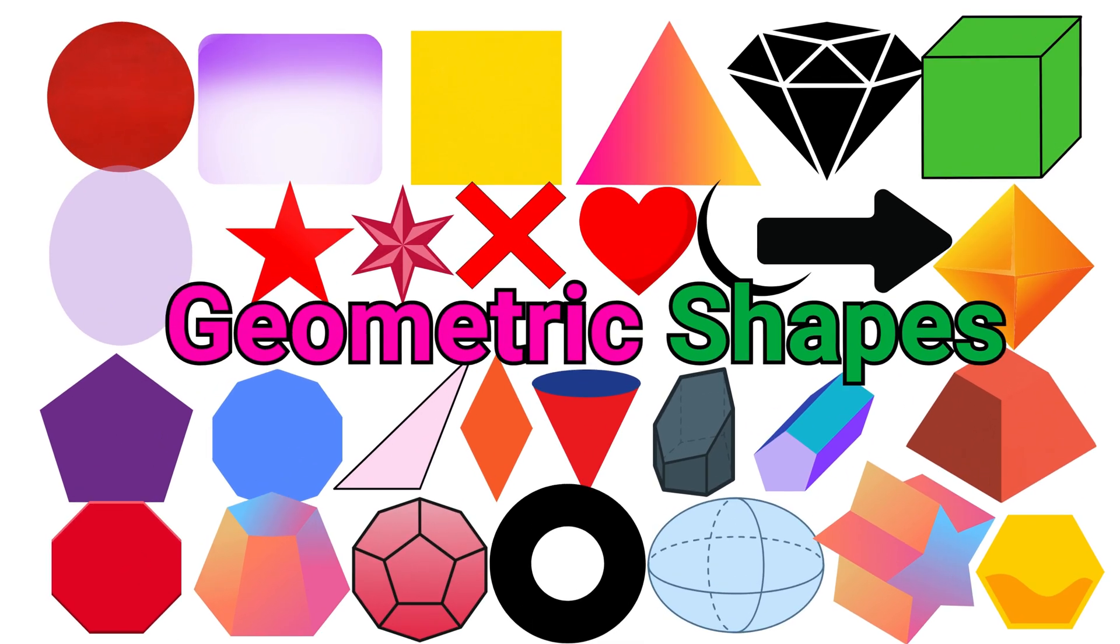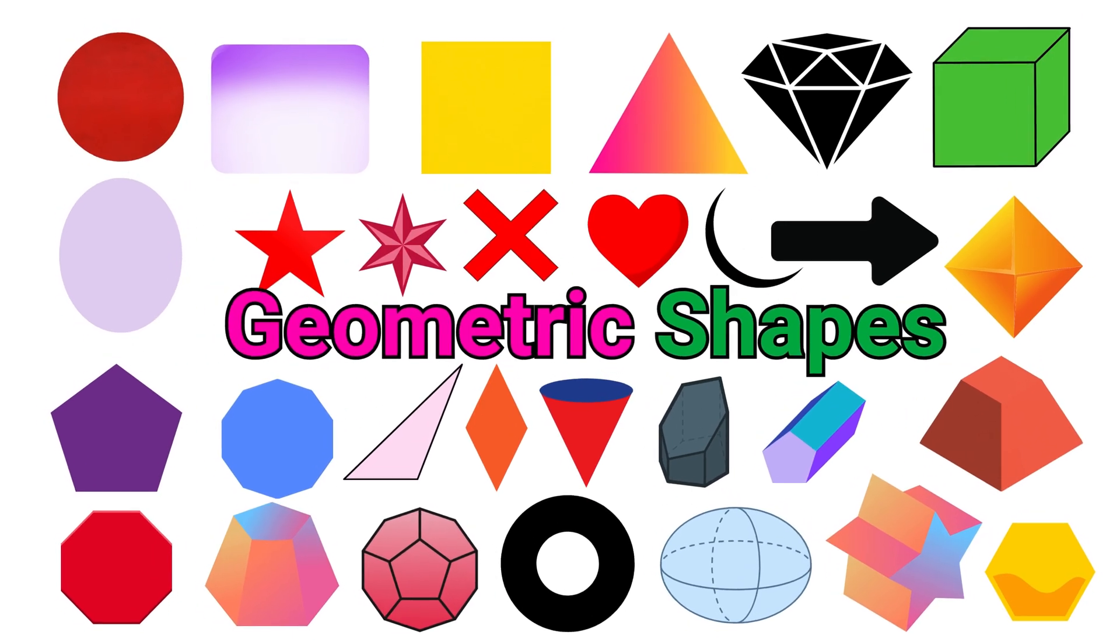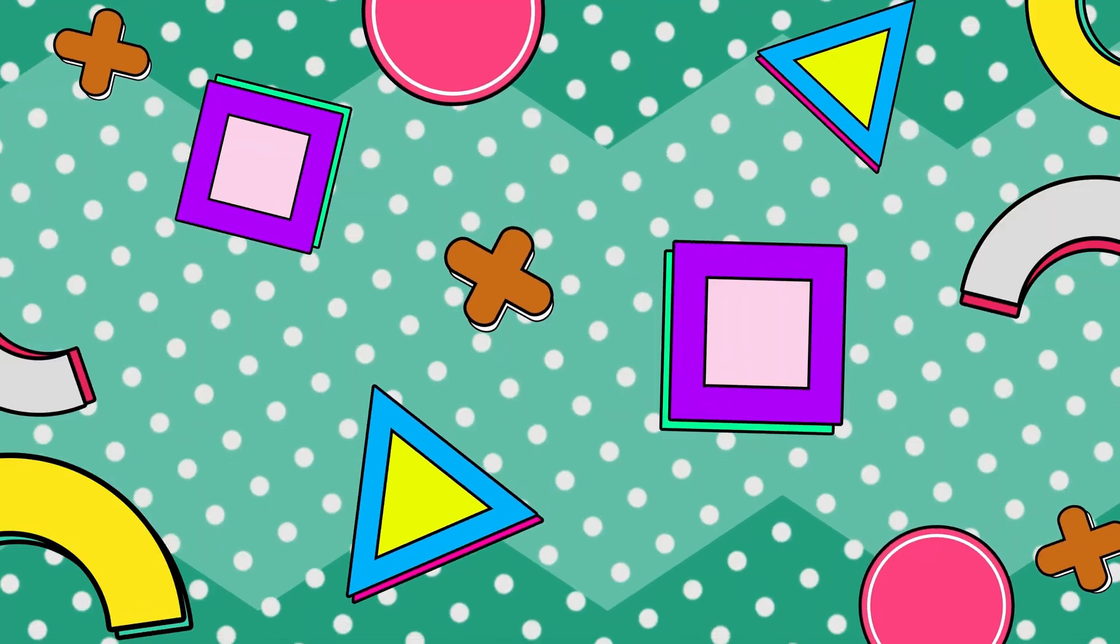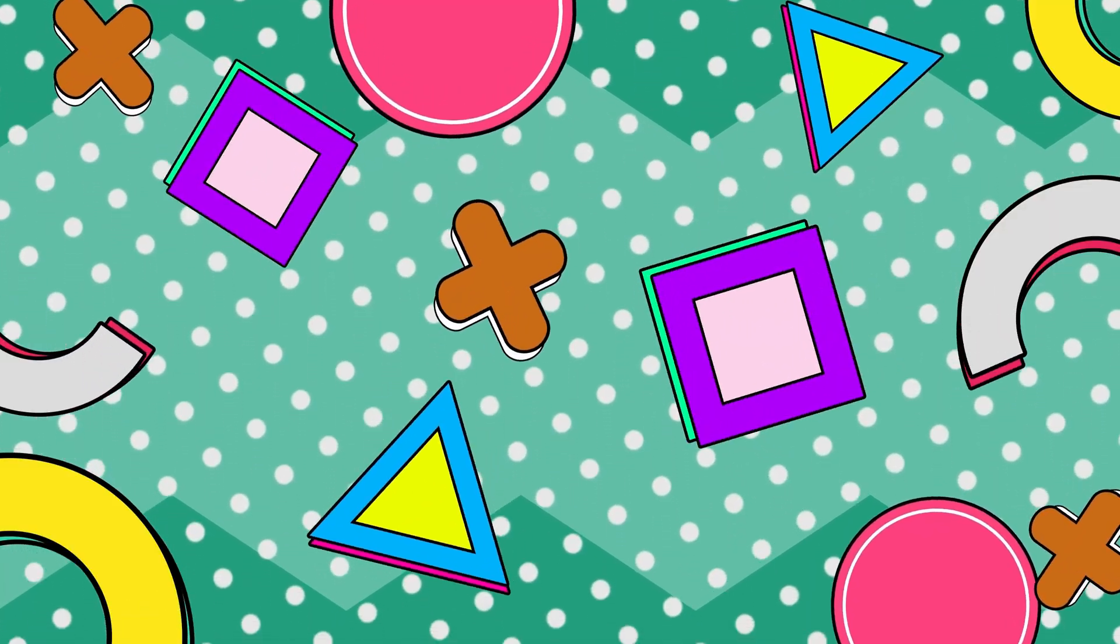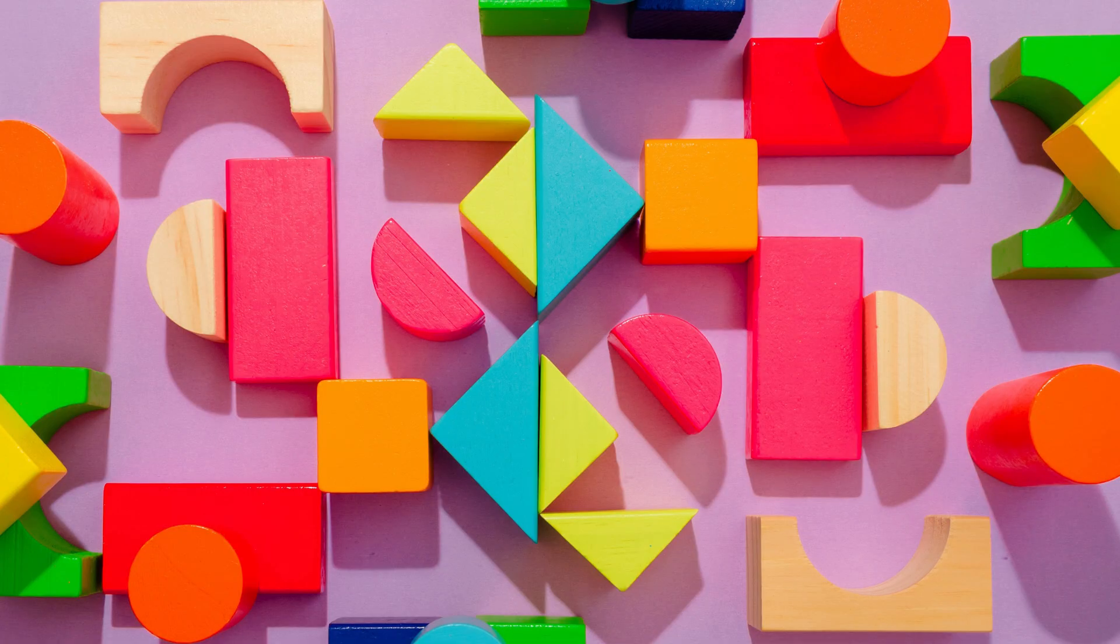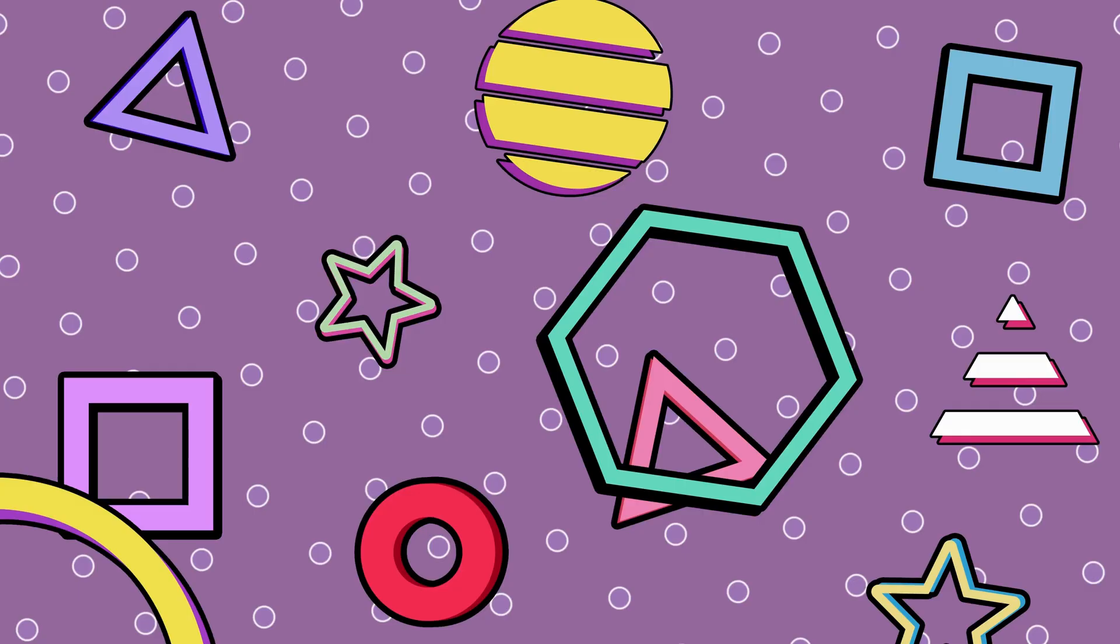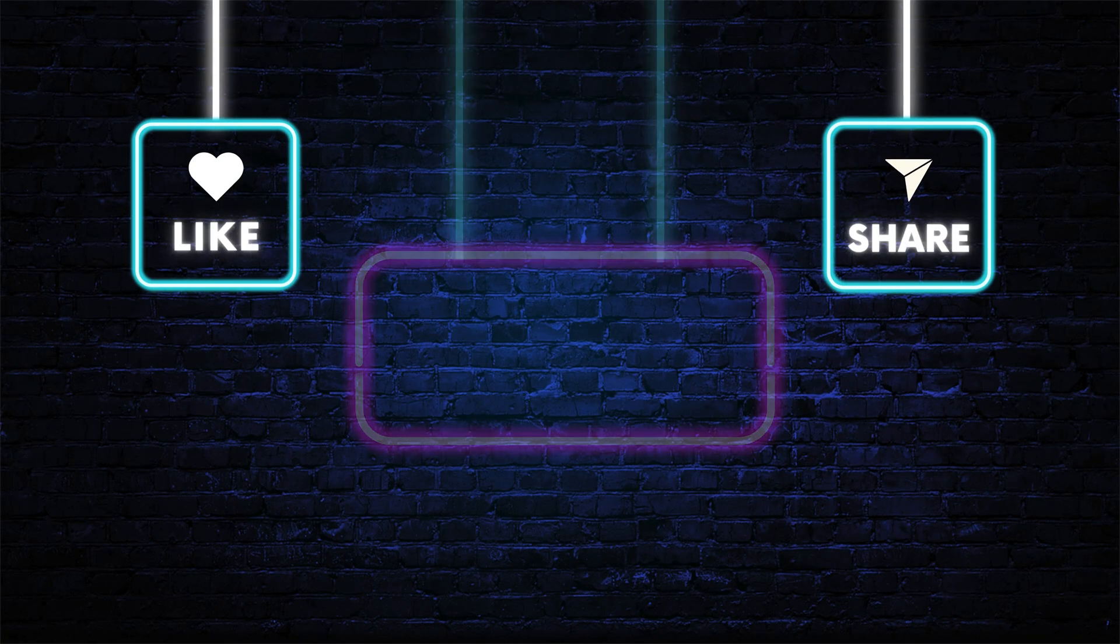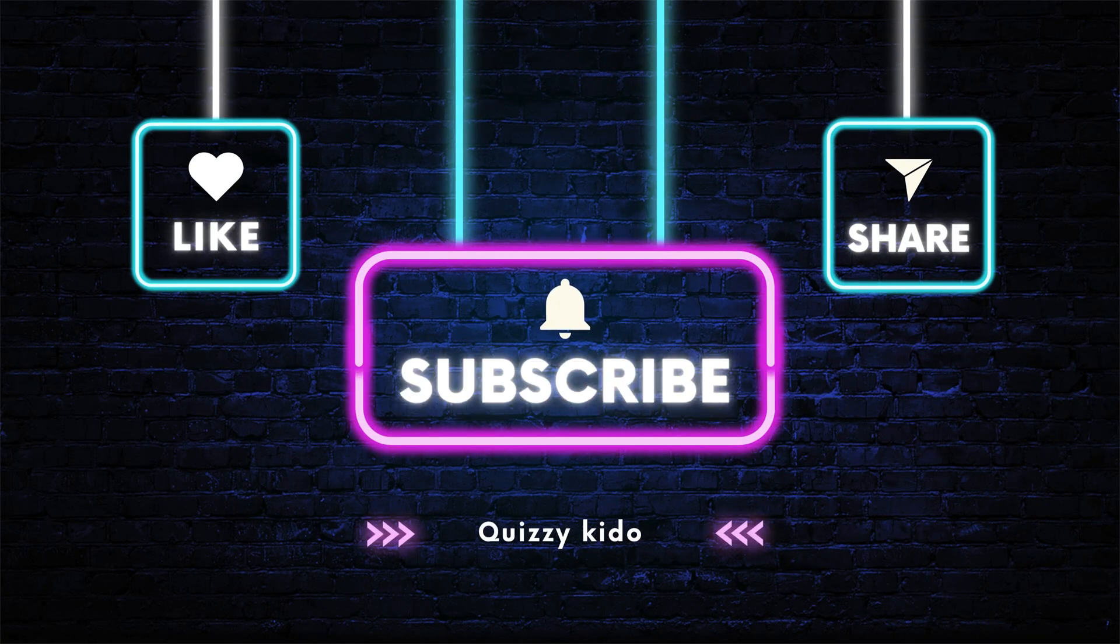Great job, kids. You just learned 70 different geometric shapes with Quizzy Keto. Shapes are everywhere. In your toys, buildings, nature, and even in art. Keep exploring, keep learning, and don't forget to like, share, and subscribe for more fun learning videos.